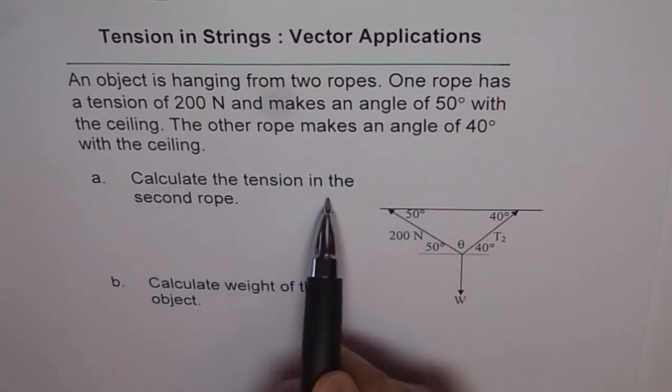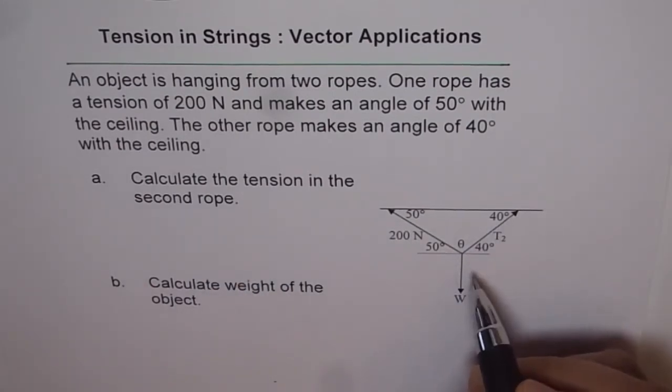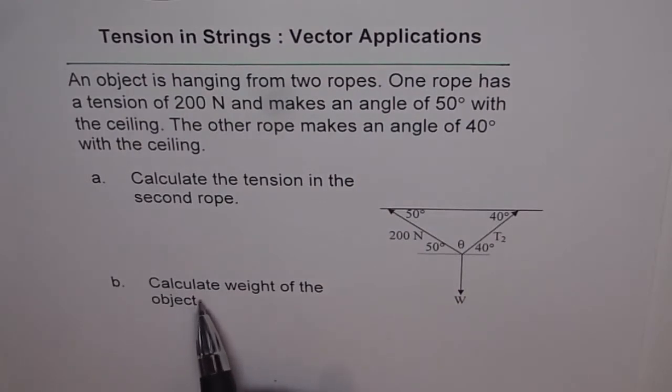Calculate the tension in the second rope. We need to find the tension in the second rope and the second part is calculate the weight of the object which is hanging here. That is what we need to figure out.